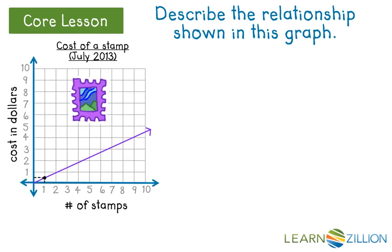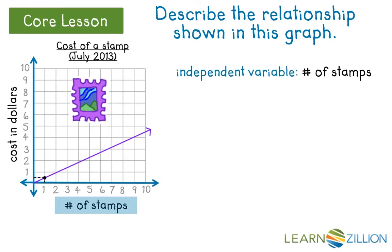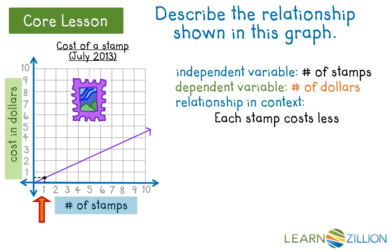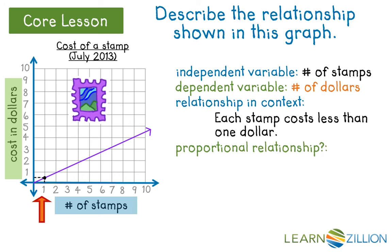Let's take a look at another graph. The independent variable is the number of stamps and the dependent variable is the cost in dollars. What is the relationship in context? Look at the title — we're looking at the cost of a stamp. For one stamp it looks like it costs less than one dollar, so each stamp costs less than one dollar. Is this a proportional relationship? Yes, because there's a constant rate shown by the straight line and zero stamps cost zero dollars.